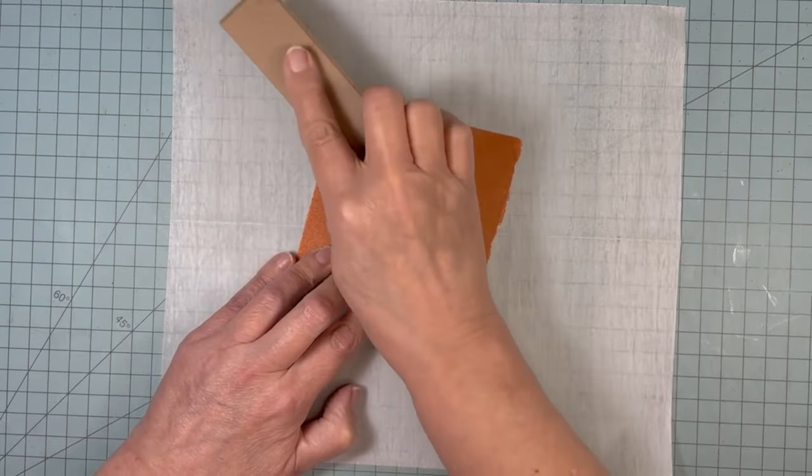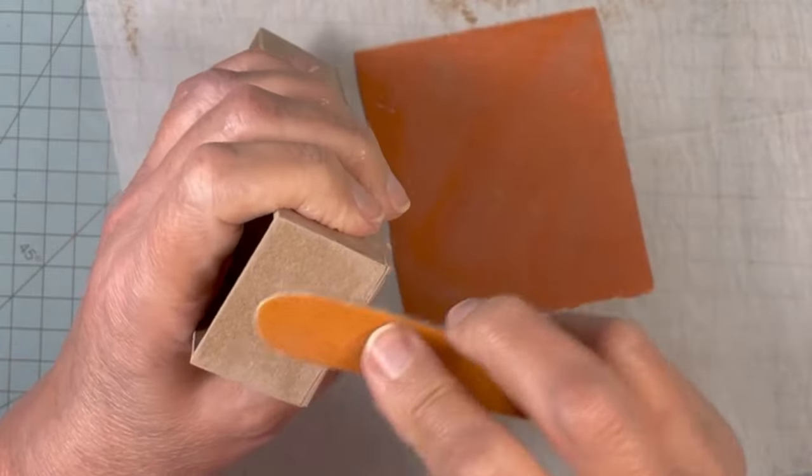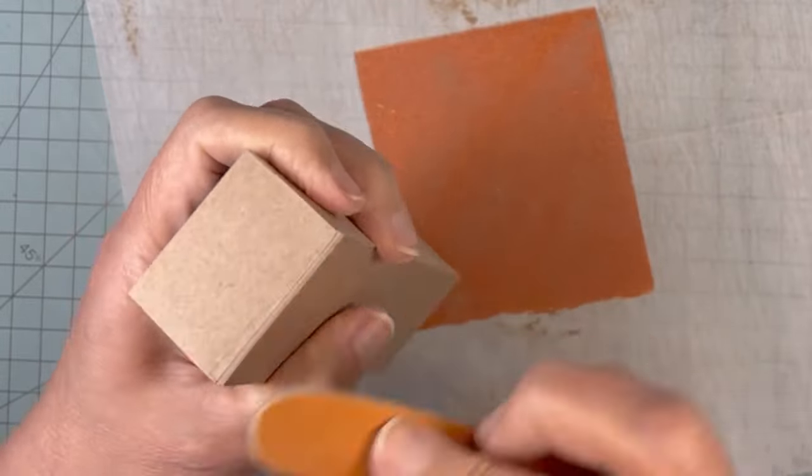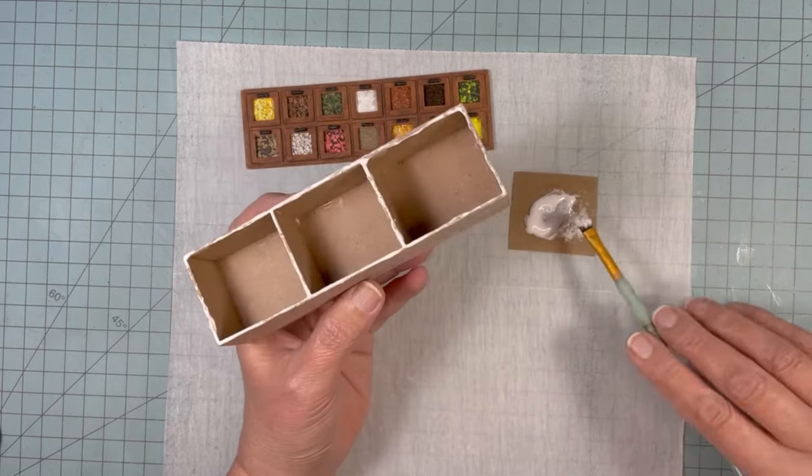Because I can't do any sanding once I have glued the front on, it will put a lot of dust on the little glass windows. And now I'm ready to glue the front onto the back.